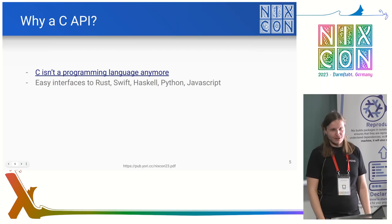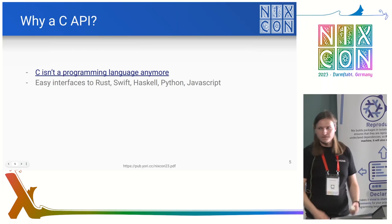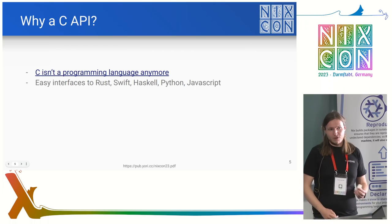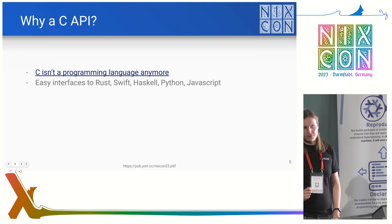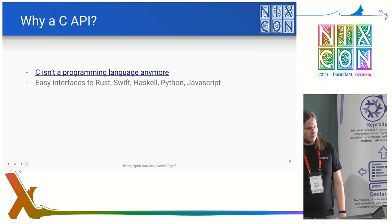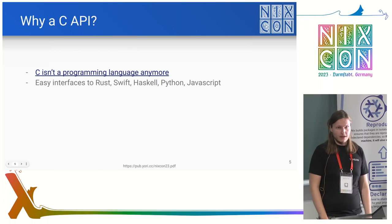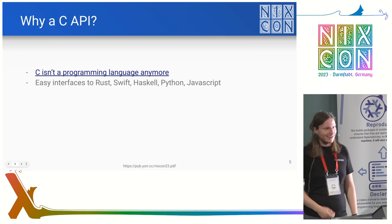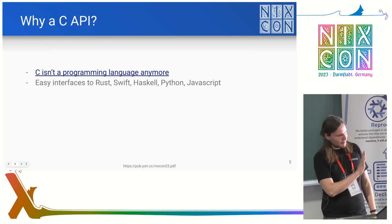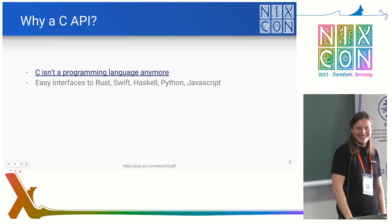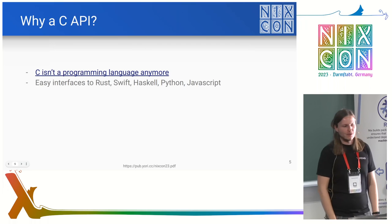C is no longer really a programming language — it's more of an interface. If your program talks C, and your other program also talks C, then you can communicate. You can do this from basically any language you can imagine: Rust, Swift, Haskell, Python, JavaScript. This talk is about the Python bindings, but I also know someone who has Chicken Scheme bindings for this, and I've also written JavaScript bindings.